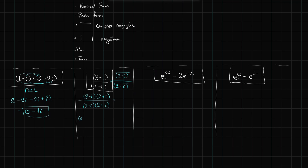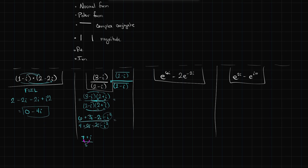FOILing the numerator gives 6 + 3i − 2i − i², and the denominator gives 4 + 2i − 2i − i². The ±2i terms in the denominator cancel, and −i² = +1, leaving 7 + i in the numerator over 5. Distributing the 5 to both terms in the numerator gives 7/5 + i·(1/5) as the normal form in the second case.